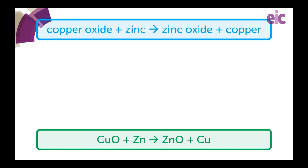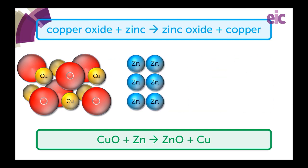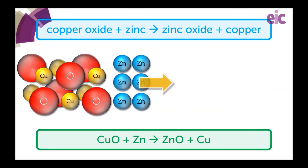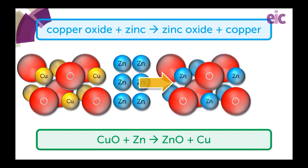In terms of what's happened in the reaction, the copper started in a compound with the oxygen — copper oxide. The zinc, a more reactive element sometimes said to have a higher activity, steals the oxygen away from the copper. The zinc is oxidised to zinc oxide and the copper in the copper oxide is reduced to the metal.